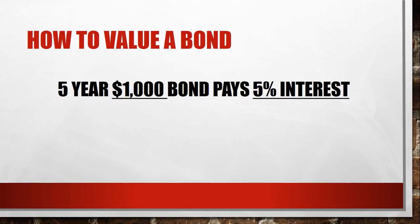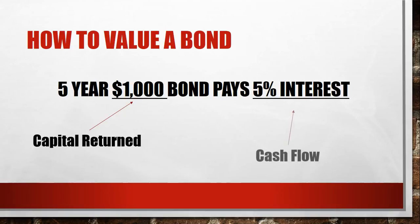I've underlined the two key parts and you need to know the words we use to describe these. Thousand dollars we can talk about as the capital return — in five years time you're going to get a thousand dollars paid back to you when the bond is repaid. Then you're going to get a recurring cash flow of five percent as interest. We've got two parts and each needs to be calculated separately.